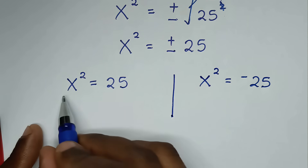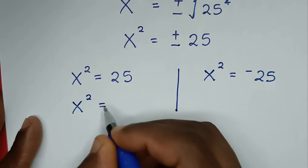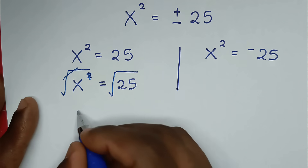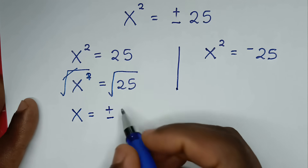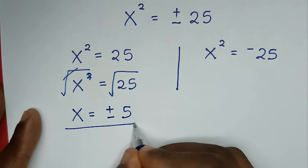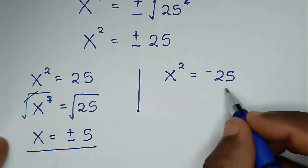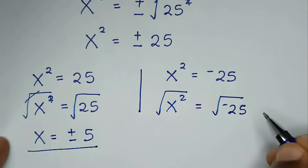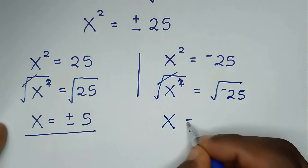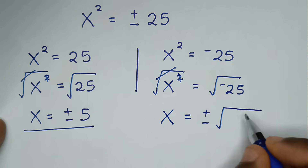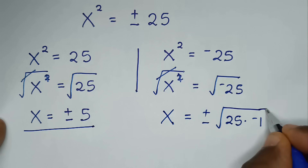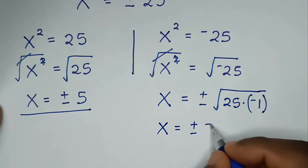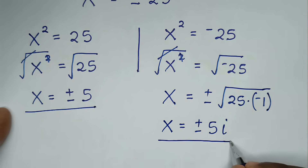From the first solution, applying square root to both sides of x squared equals 25 gives x equals plus or minus the square root of 25, which is plus or minus 5 — two real solutions. From the second solution, applying square root to x squared equals negative 25 gives x equals plus or minus the square root of negative 25, which is plus or minus the square root of 25 times negative one, so x equals plus or minus 5i — two complex solutions.